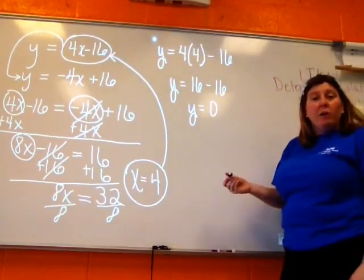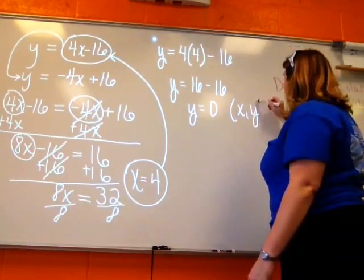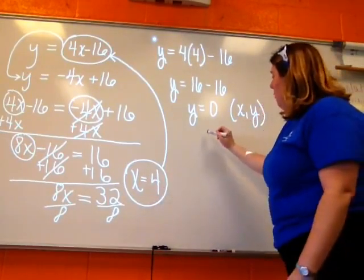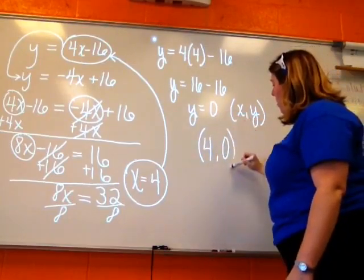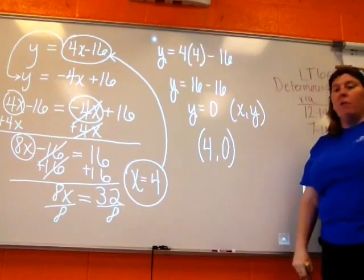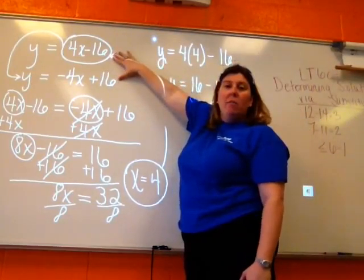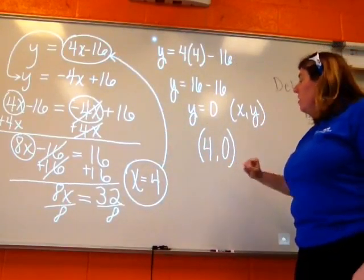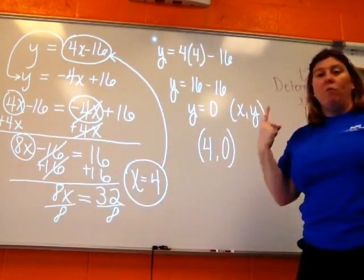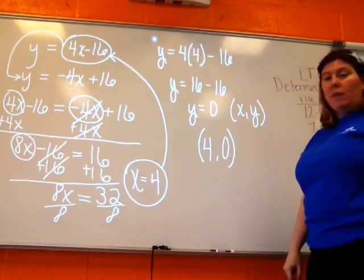Remember, we write our answer in terms of an ordered pair. So we need our answer to be X comma Y. Well, my X happens to be 4. My Y happens to be 0. So the answer is 4, 0. Which means that if I were to take these two lines and I were to graph them, they would cross at the point 4, 0. So they have one solution and that one solution is 4, 0.